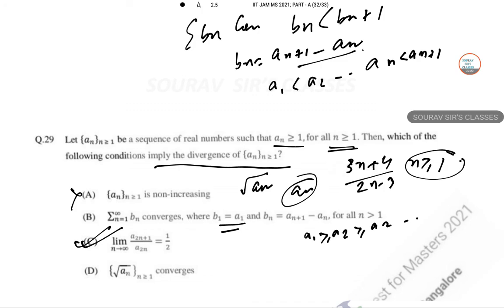And this is half, that means a subsequence is formed. Subsequence is convergent if the main thing is convergent. And this root over a_n part is not also applicable. So answer to this is C for sure.